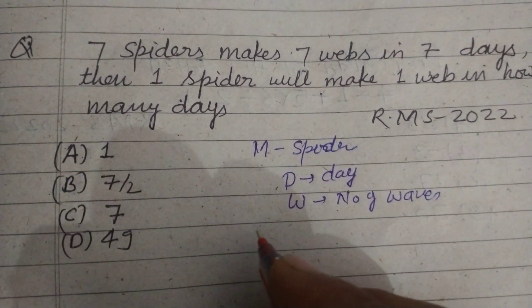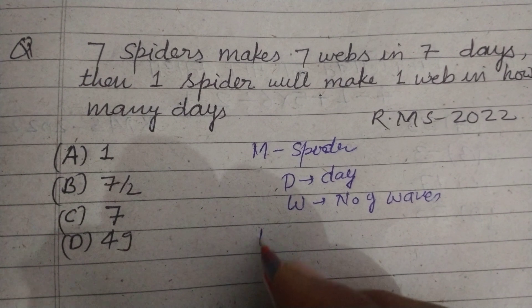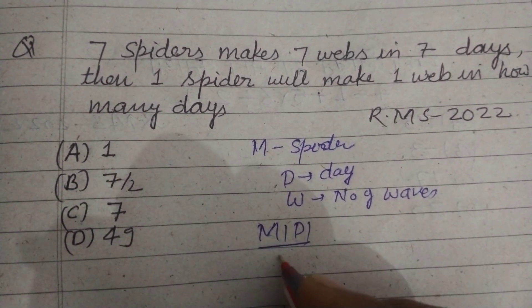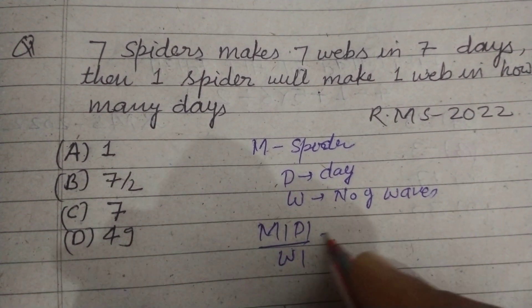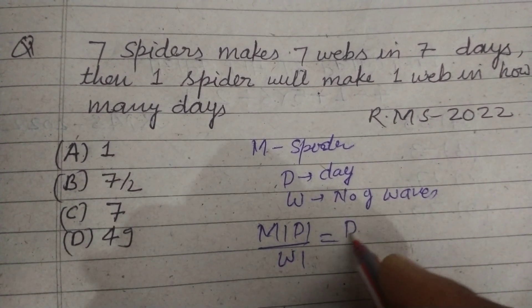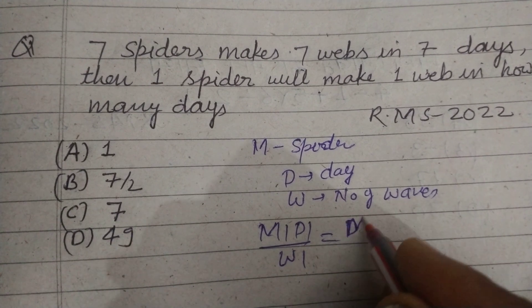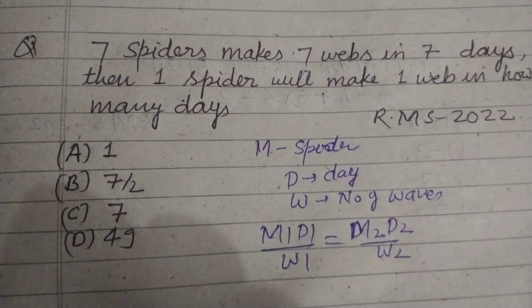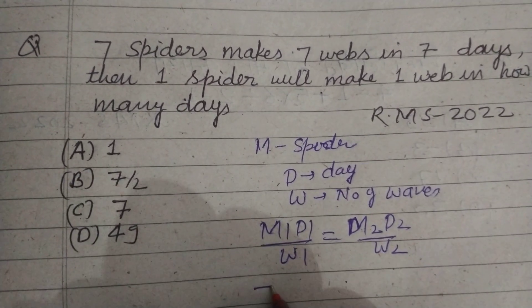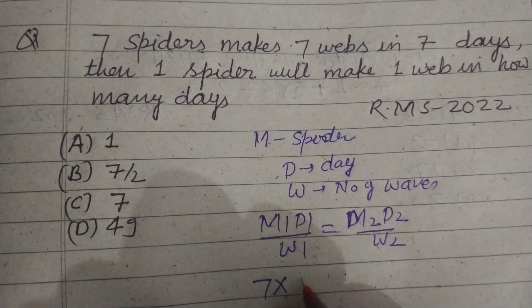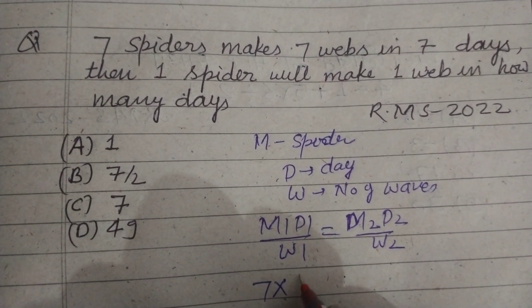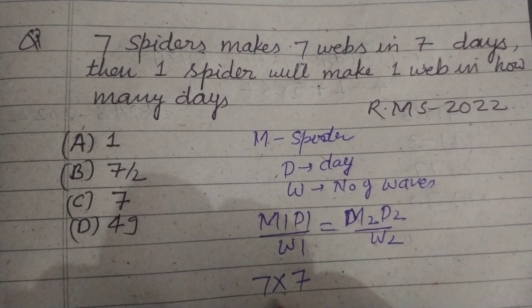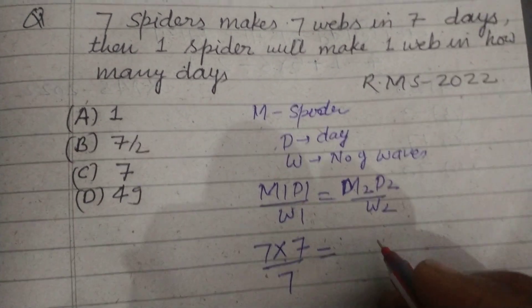Using the formula: M1 × D1 over W1 equals M2 × D2 over W2. In the first condition, M1 is 7, D1 is 7, and W1 is also 7.